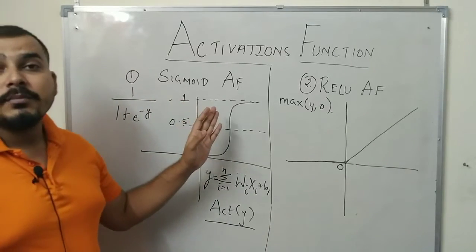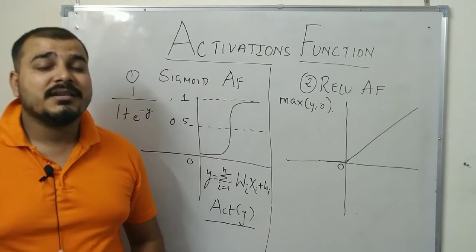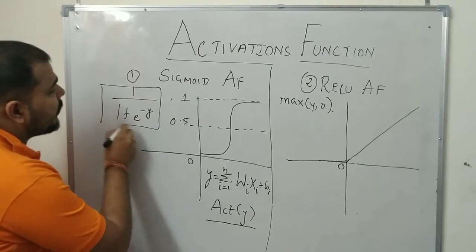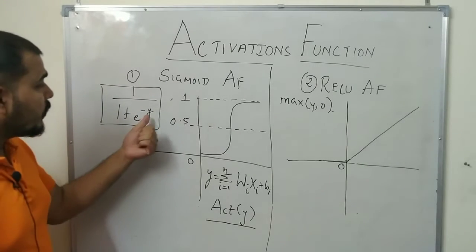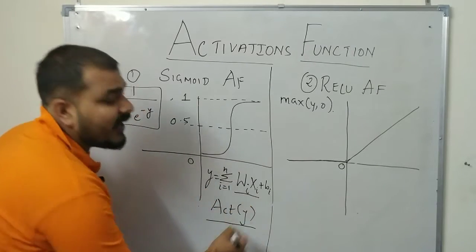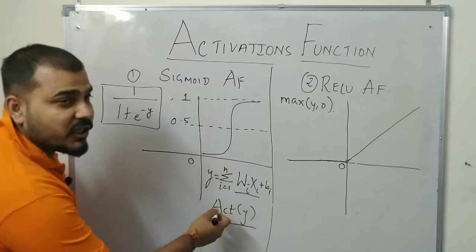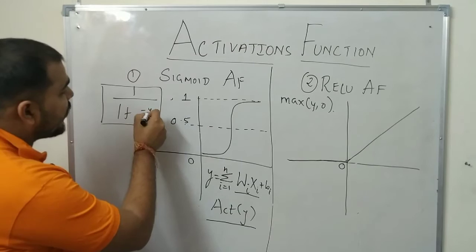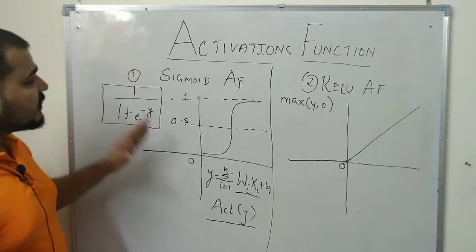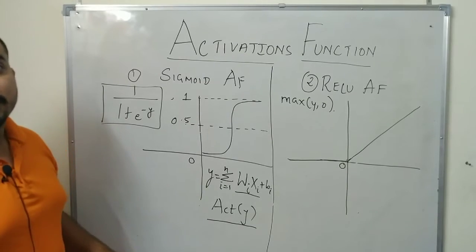The first activation function I would like to mention is the sigmoid activation function. This sigmoid activation function is basically used in logistic regression also. The formula is 1 divided by 1 plus e to the power of minus y. Now what will be this y? Y will be basically the value of the weights multiplied by the input features plus bias, and this y is basically transferred to the activation function. This y will be replaced with the product of weights and the input features plus bias.